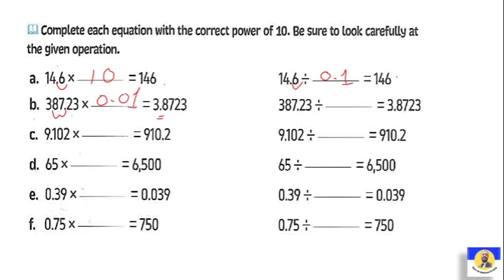اللي بعده: الـ point بعمل divide, go back two digits. Divide طبيعته إنه بيرجع الورا. يبقى عملنا divided by 100. The next: 9.102 will be 910.2, so it will be here multiply by 100. The next one: divided by what equals 910.2 — it will be 0.01.